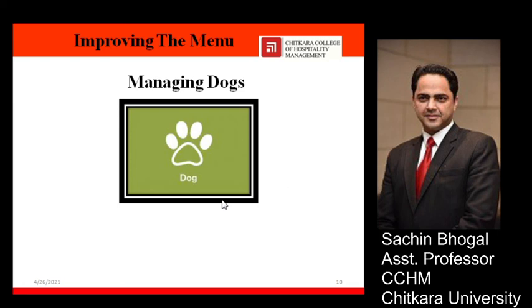Number four is managing dogs. Dogs are very low in both profitability and popularity. The first thing you can do is slowly start removing these dishes from the menu. When a dog involves significant labor cost and is not popular or profitable, removal is one option. Alternatively, by changing the recipe or changing the presentation of the dish, you may be able to add value — that is something you can do to improve your menu.